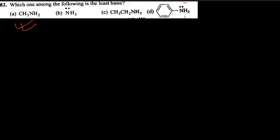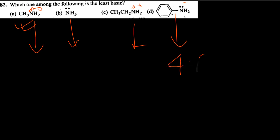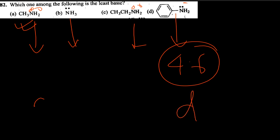Moving to the next question: which one is the least basic? Here the nitrogens are localized and free - they can donate easily. But in the case of aniline, basic strength is quite low (pKa value 4.6). So the least basic is option D (aniline).